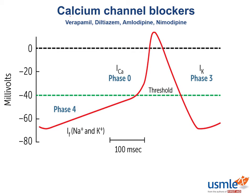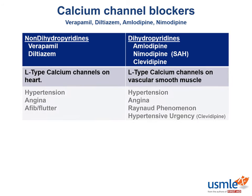If we bind the calcium channels responsible for the upstroke in phase 0, we are going to drop the rate at which we create and conduct depolarizations. This is why verapamil and diltiazem are useful in situations in which we want to drop AV nodal conduction speed, like AFib or AFlutter.